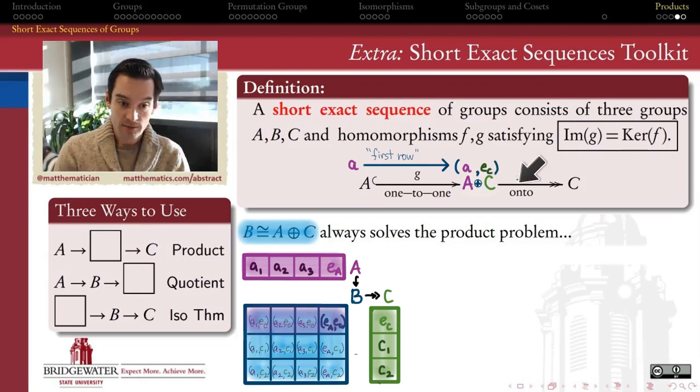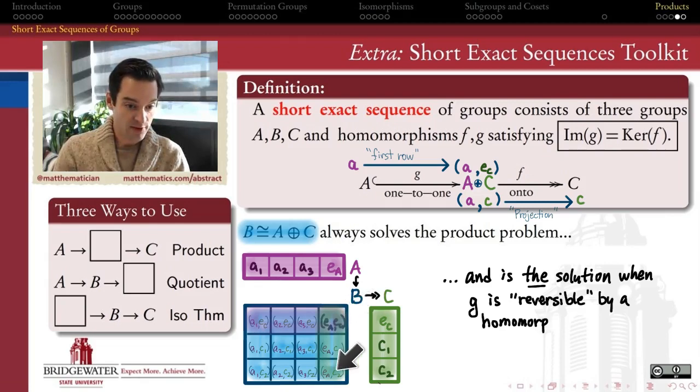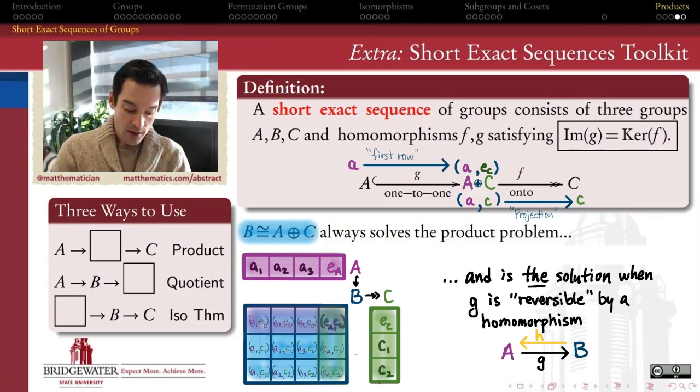So, then what about the second homomorphism that takes me from B onto C? Well, in the same way, we're just going to take the elements of C and think of them as being the second coordinate. So, it's just like a projection. So, the second coordinate of each of these then determines the element of C that I get sent to. So, A, C, ordered pair, gets sent to the element C in the group C.